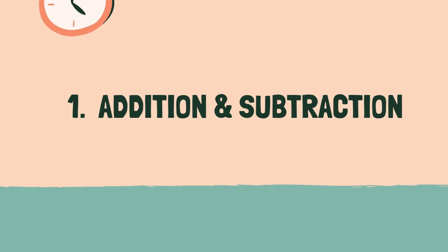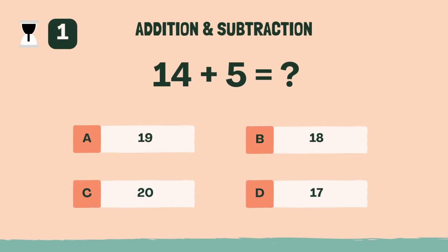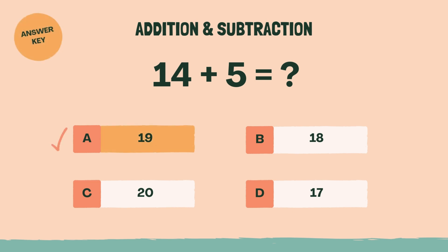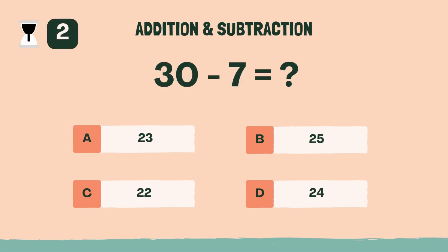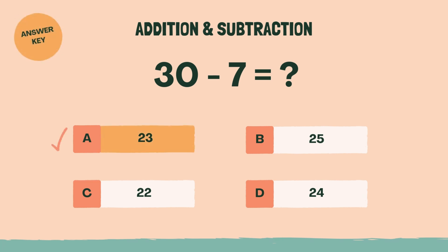Category one: addition and subtraction. Three, two, one, go. What is 14 plus five? A, 19. What is 30 minus seven? A, 23.